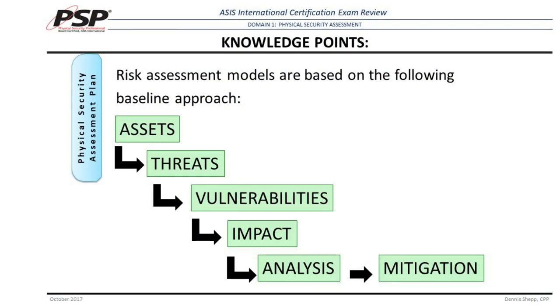Up here we have threats and vulnerabilities — two different things. At its core, a threat comes from the outside, and a vulnerability is something an organization has control over to some extent. What are your weaknesses that may give more credence to these threats, that may exponentially increase the threat that's there? That's the core difference, but in application it can go a long way.